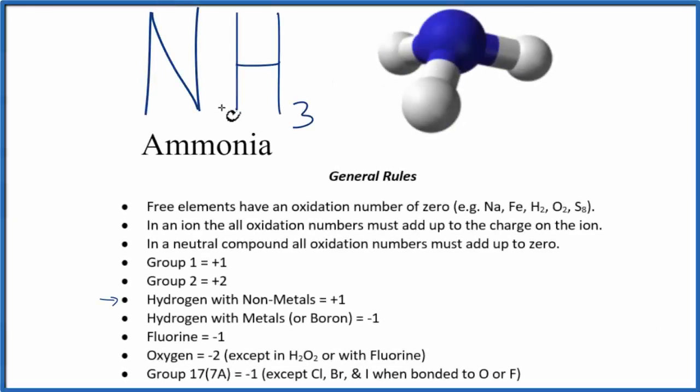In this video we'll find the oxidation numbers for each element in NH3, that's called ammonia. We use these general rules to figure it out. So the white ones are the hydrogens - we have one, two, three of those - and then this purple blue is the nitrogen.